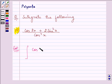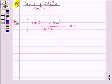We have cos 2x plus 2 sin squared x whole divided by cos squared x with respect to dx. Now here we can write cos 2x as 1 minus 2 sin squared x.